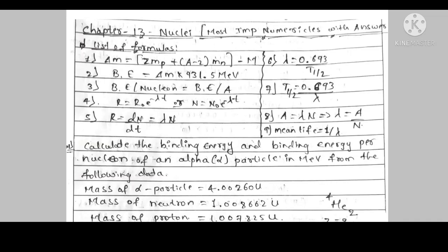Here is the list of formulas. First formula: mass defect. Second one, binding energy. Third one, binding energy per nucleon. Fourth one, N = N0 e^(-λt), the decay law. Then fifth one, R = λN. Sixth one, decay constant formula. Seventh one, half-life formula. Eighth one, activity formula. Ninth one, mean life formula.